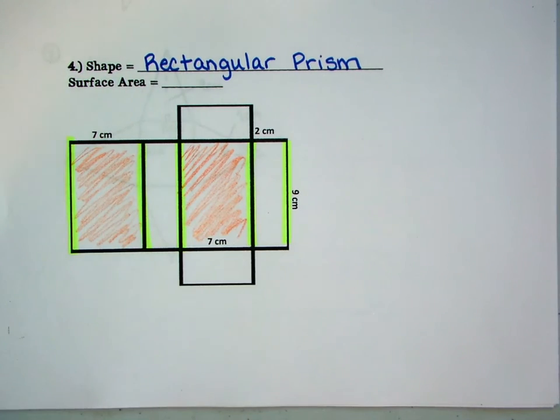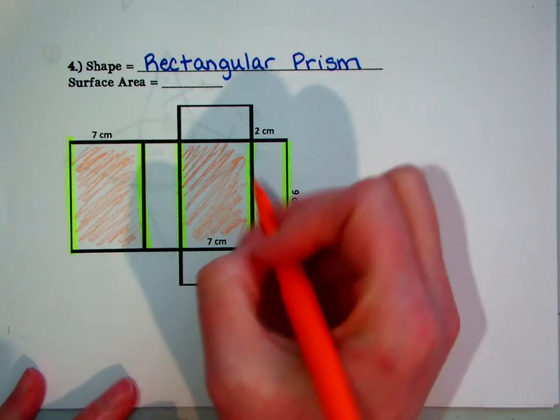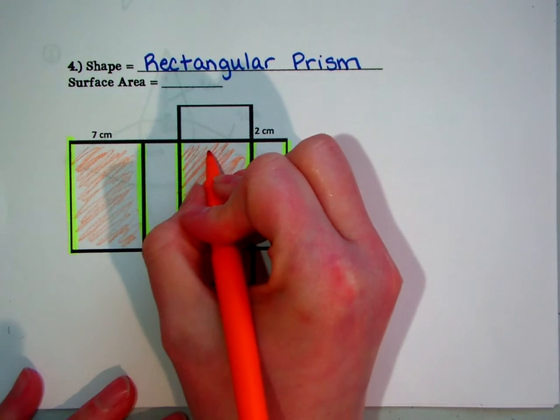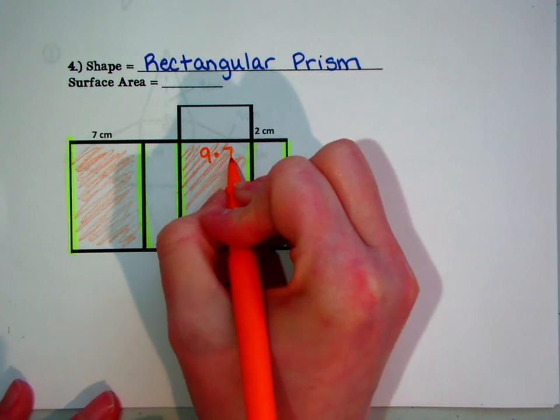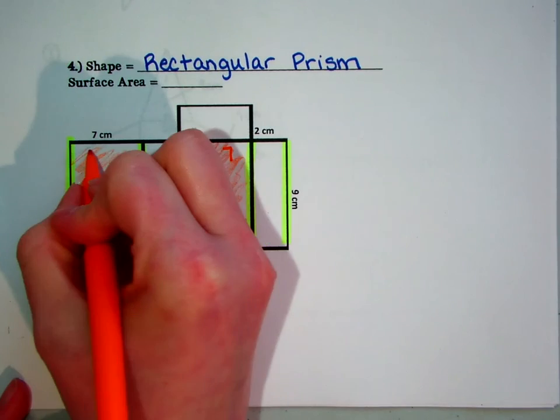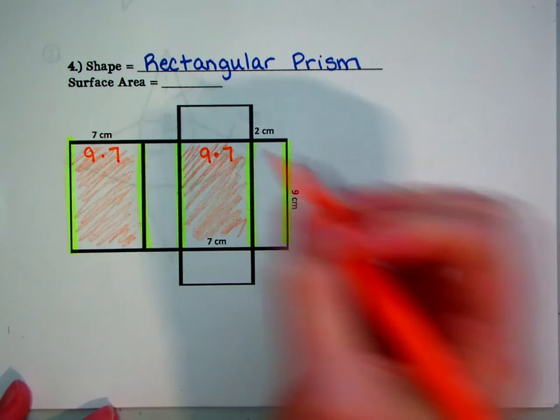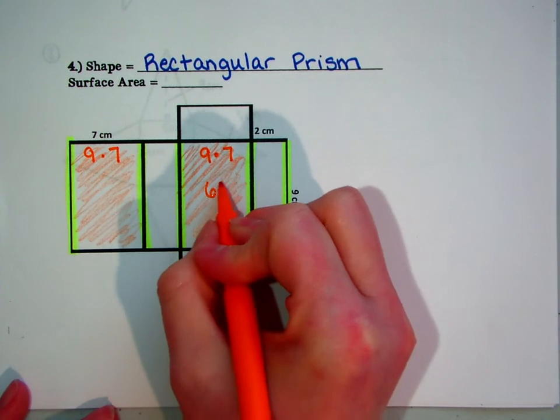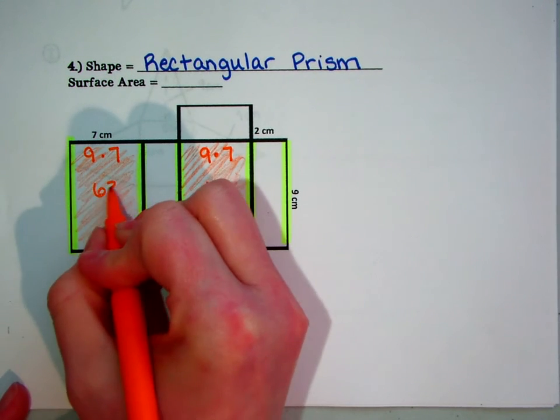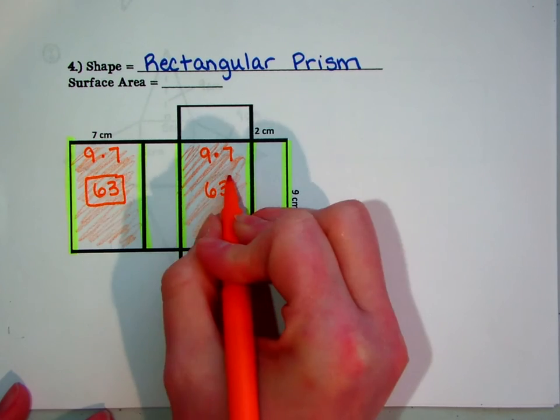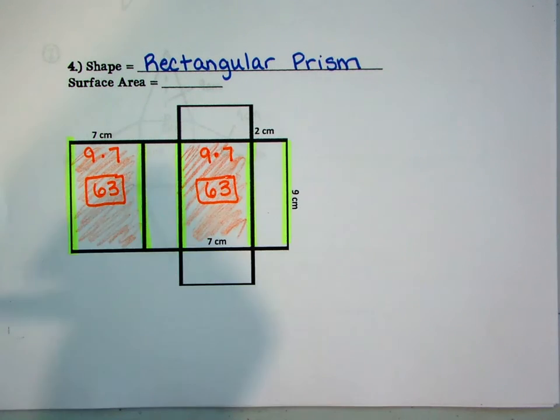So, this guy right here is a 9 by 7. I'm just going to go ahead and write that on both of these. They are both 9 by 7. You guys know the product of that. That's 63. Let's go ahead and solve that and put it in there. Just like we've been doing this entire time. I'm actually really glad I have this colored pencil. It's easy to write on.